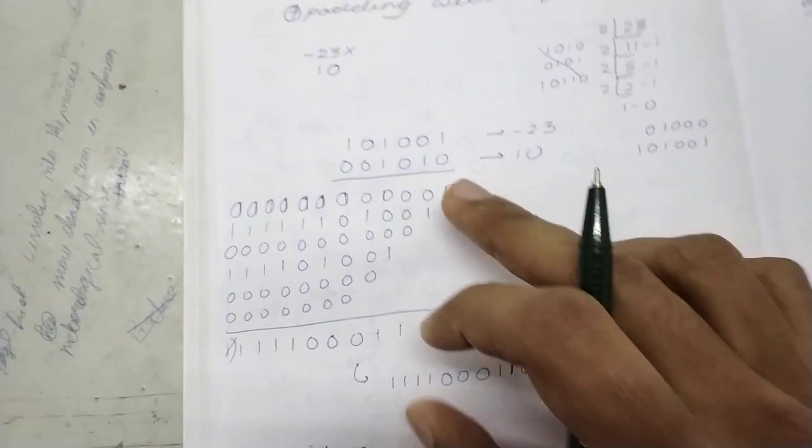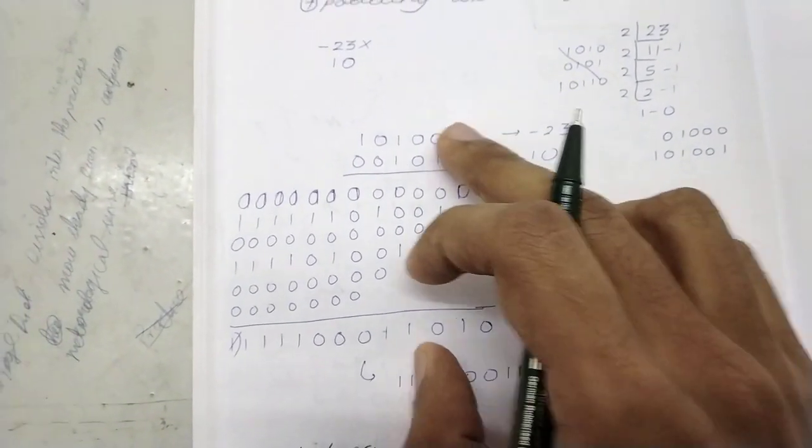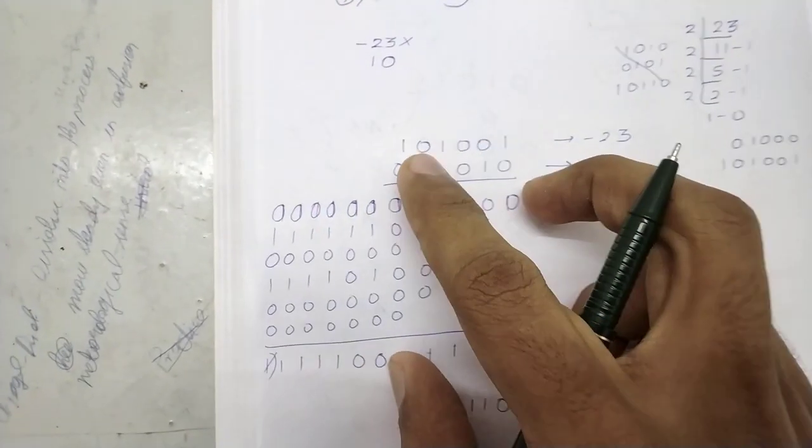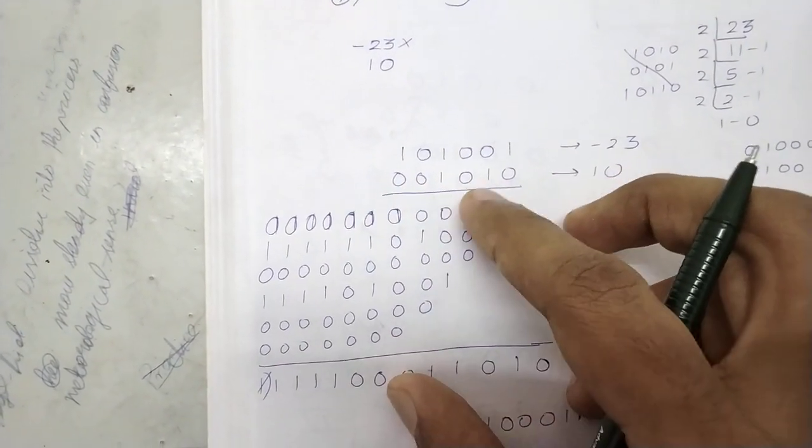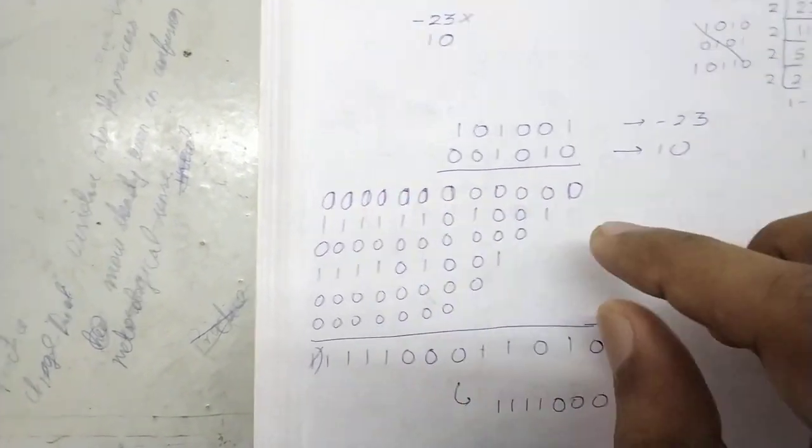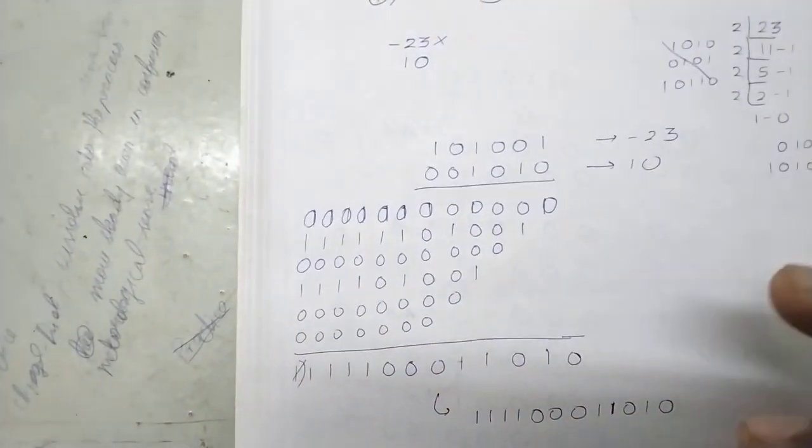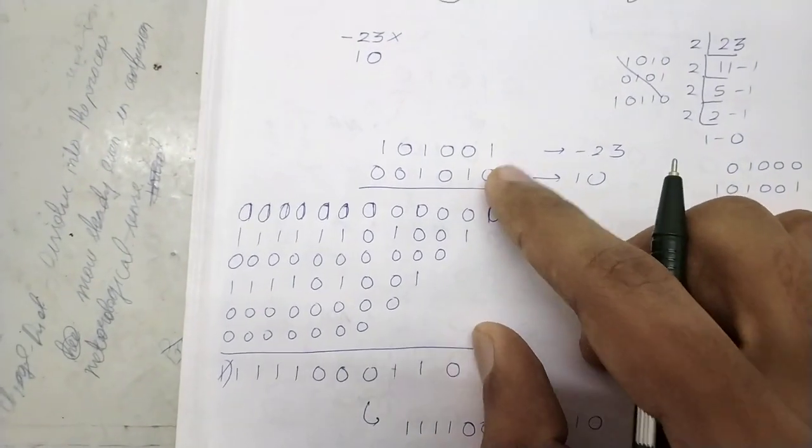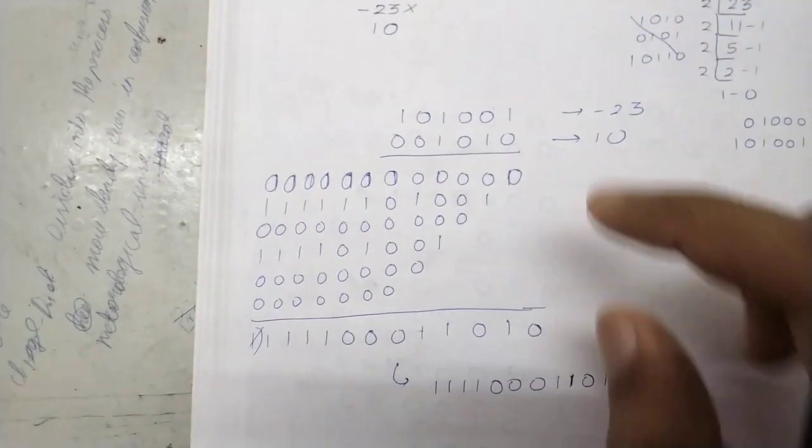That's just extending the sign bit. So 0 into this number, we will get... how many numbers are here? 1, 2, 3, 4, 5, 6. So there must be 12 bits here. Those are 12 bits, okay.